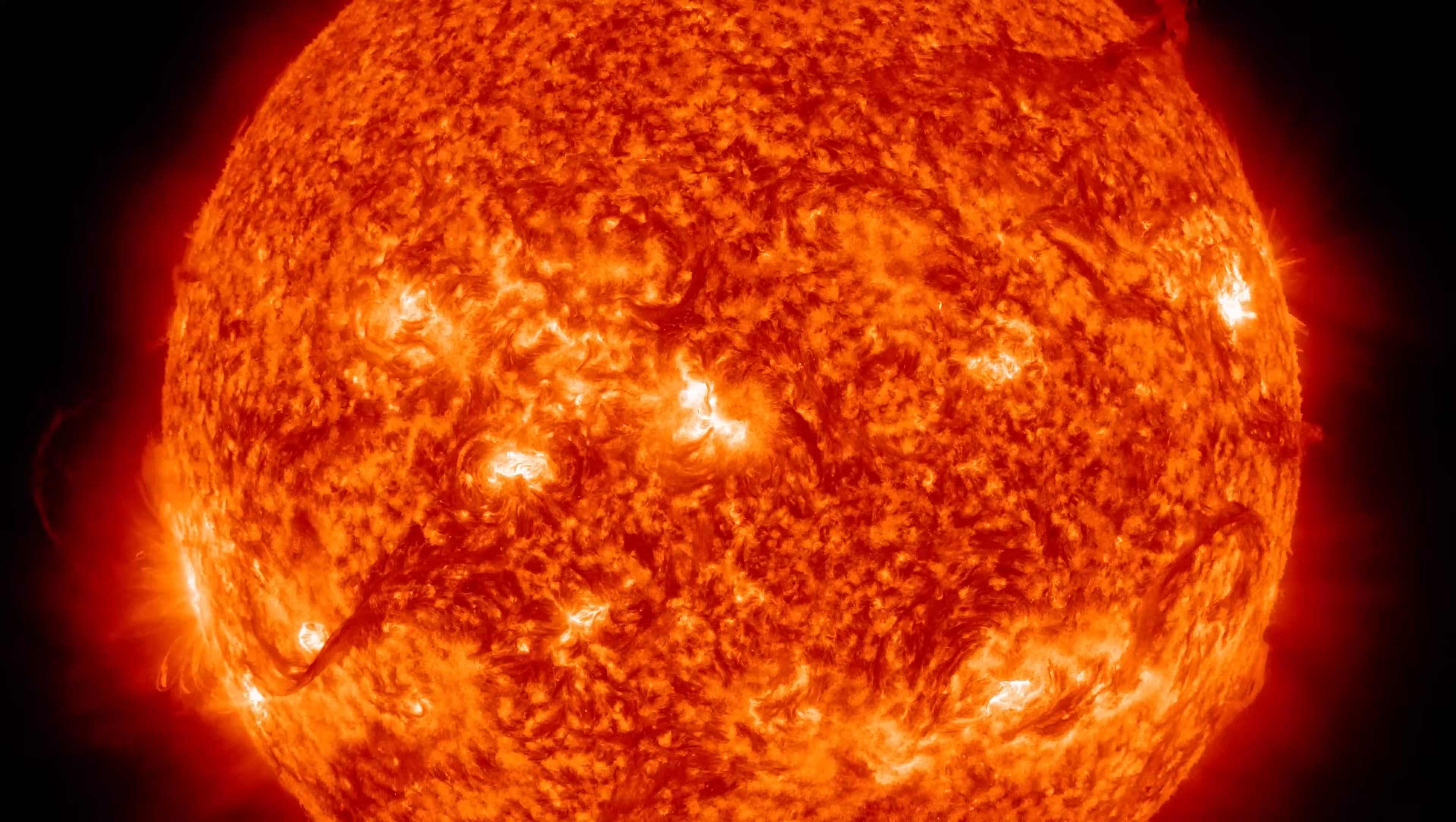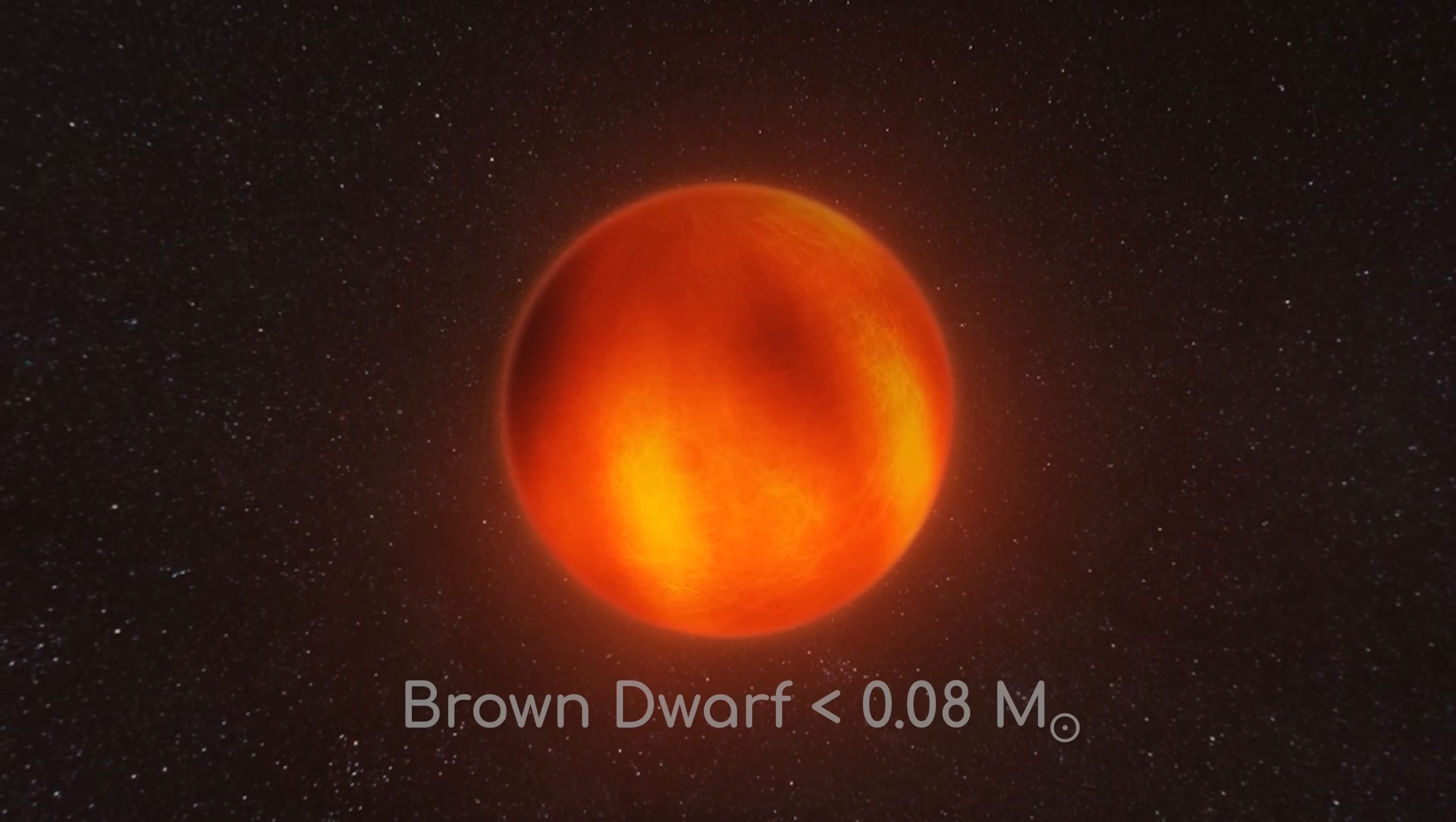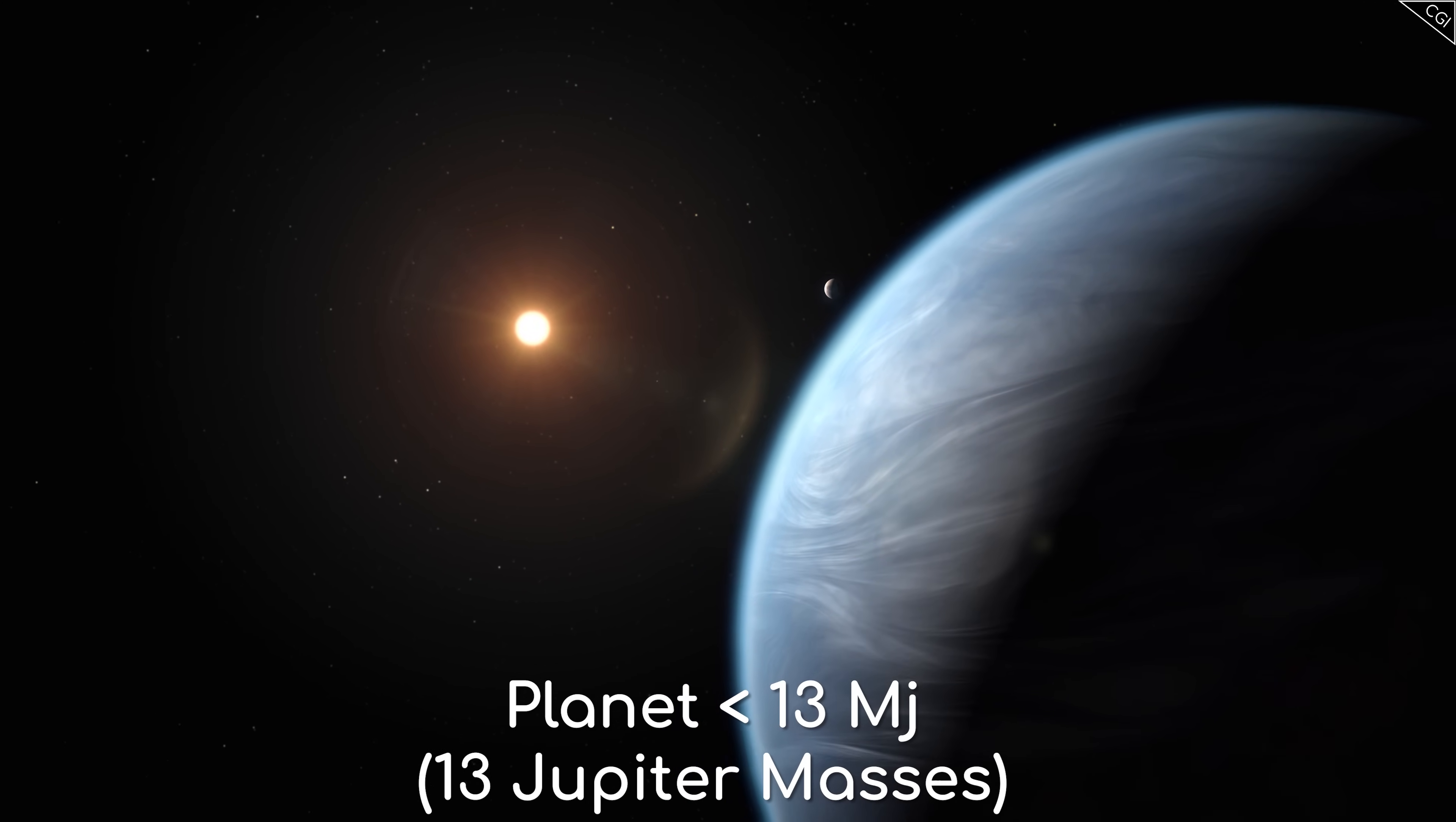In order for a star to be a star, it has to be over a certain mass, namely 0.08 solar masses, or 8% of our Sun's mass. Below this threshold, the object is classified as a brown dwarf, because it didn't become massive enough for nuclear fusion to take place in its core. Lower masses than brown dwarfs are simply planets, asteroids, and dust.